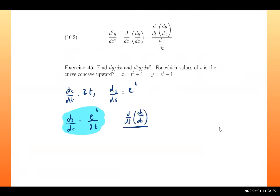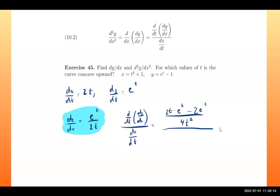For the second derivative, we take d/dt of the first derivative divided by dx/dt. To differentiate e^t/(2t), we use the quotient rule: the bottom times the derivative of the top minus the top times the derivative of the bottom, all over the bottom squared. Then we still divide by dx/dt, which is 2t.